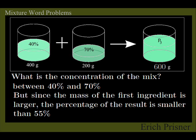Now, since the first ingredient has more mass than the second, it has more influence, more weight, so the percentage of the result would be a little closer to 40%. Did I hear 50% as a guess? Yes, that sounds reasonable. As a guess. We will do an exact calculation in a second.